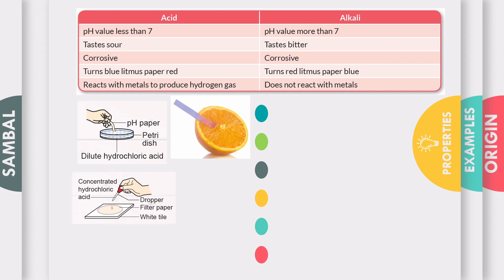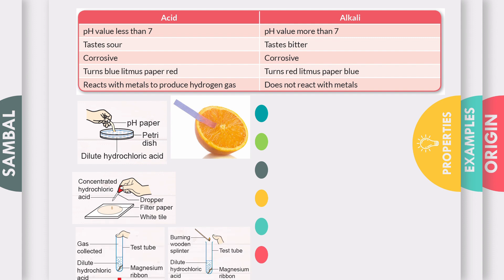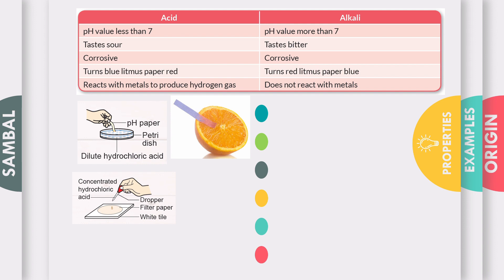The second one is the corrosive test. For the corrosive test, this test has to be done in the fume chamber by using protective goggles. You put a drop of concentrated hydrochloric acid on a piece of filter paper, which is placed on a white tile. After a while, you can see the filter paper erodes and a hole will be formed.